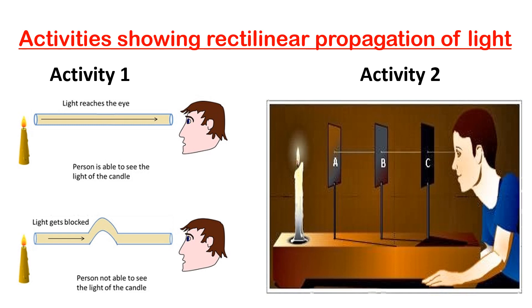See these activities. They are showing that the rectilinear propagation of light. In the first activity, the boy is able to see the light through a straight pipe. But in the second, he is unable to see the light because this pipe is not straight.